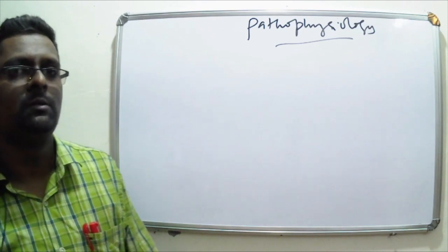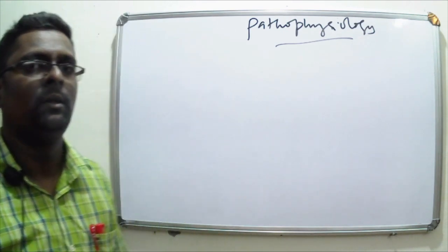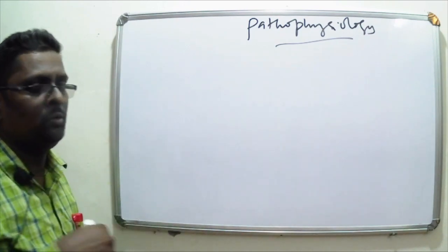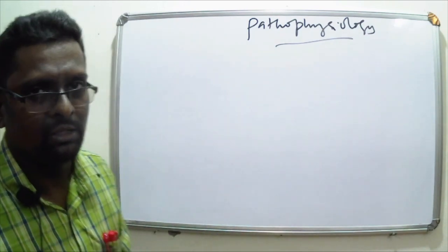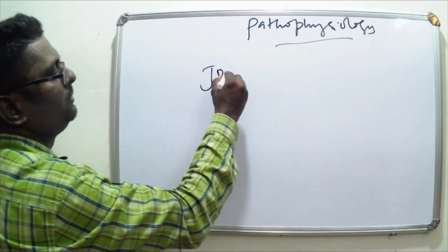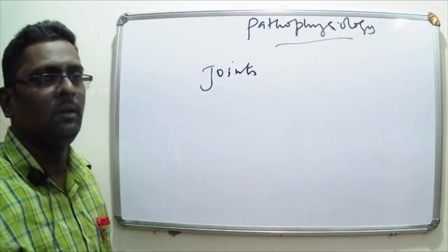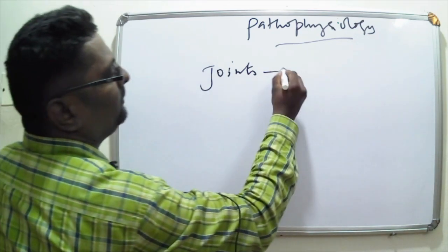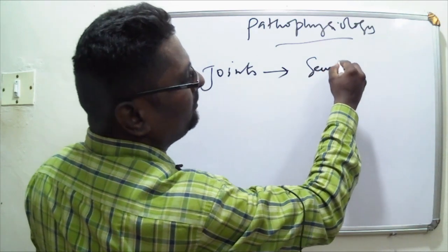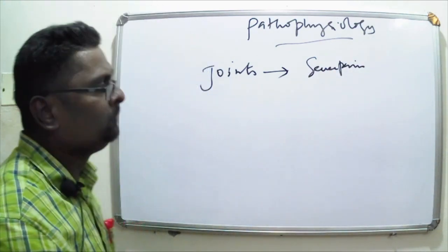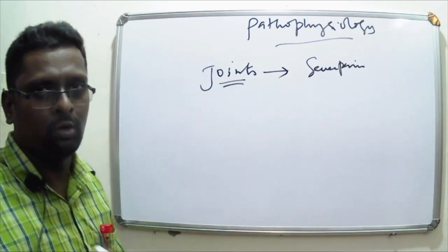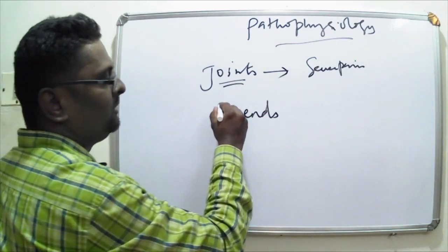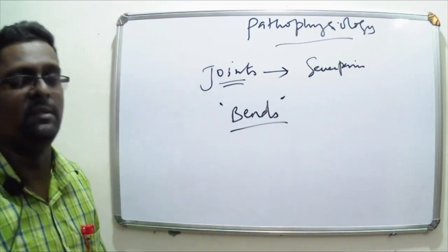The signs and symptoms depend upon which body part is affected. Generally, the joints are most commonly affected by the nitrogen bubbles, causing severe joint pain. Because joints are most commonly affected, this disease is also called 'the bends.'